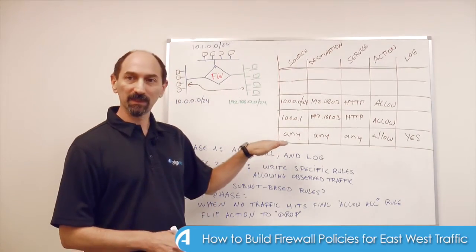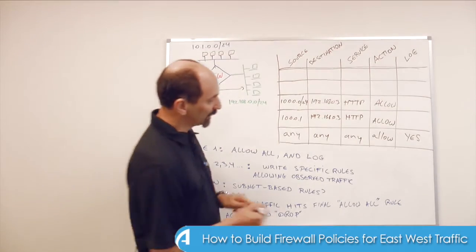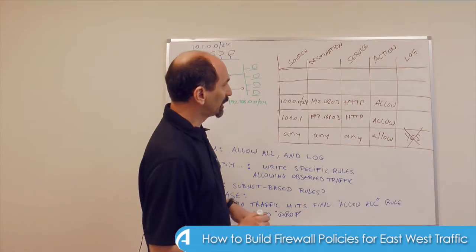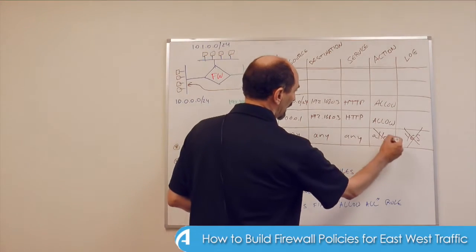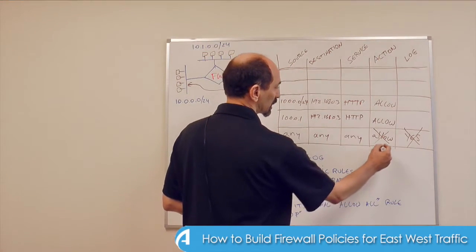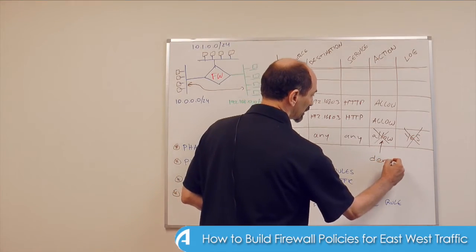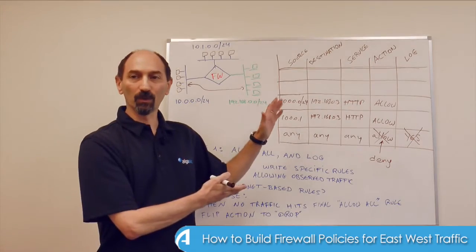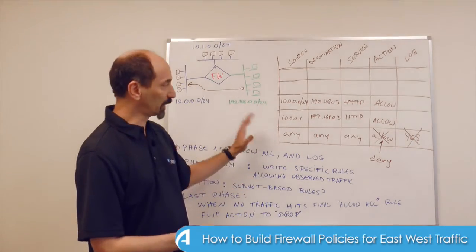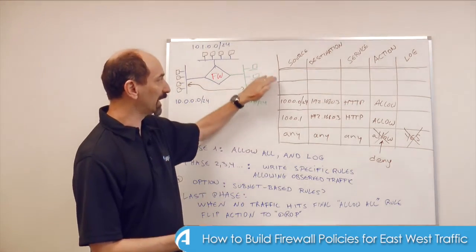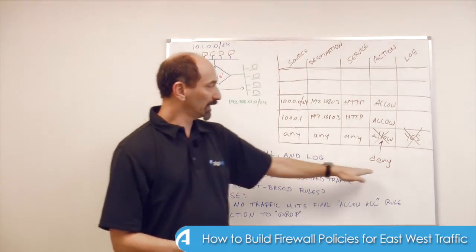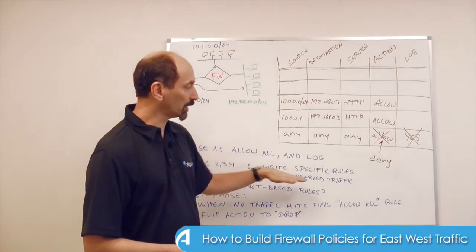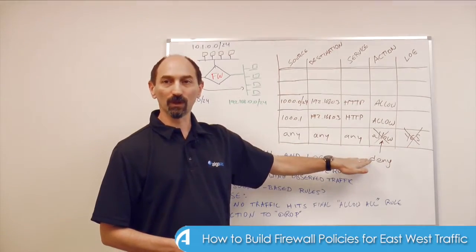When that happy day arrives, you can replace the log statement and the allow action and replace it with deny. Now you have a firewall that's actually protecting you, because all the specific traffic is allowed by the explicit rules, and the final rule is deny — just like we always want to see in a properly configured firewall. The last rule is by default a deny.